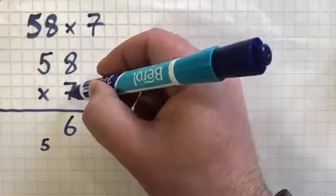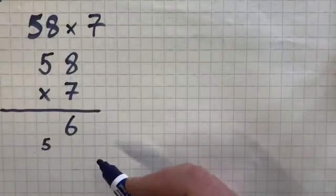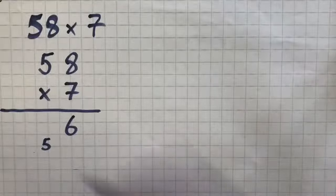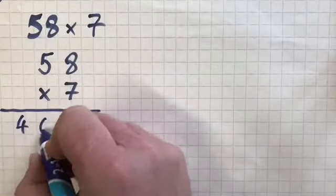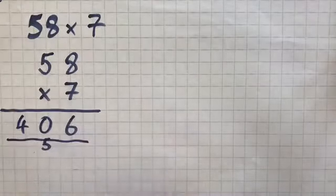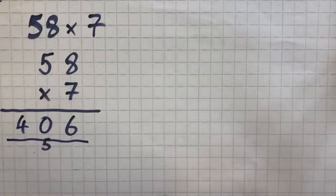The next thing we do is 7 times 5 is 35, plus the 5 there gives us 40. And we arrive at our solution: 406.